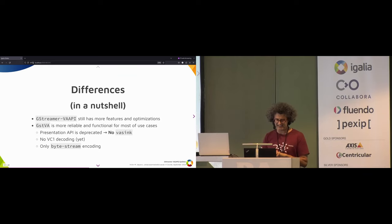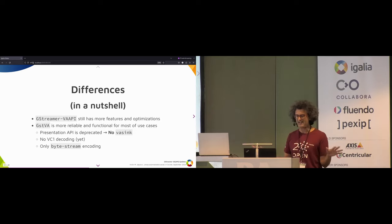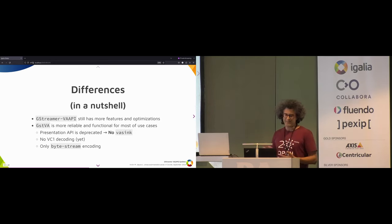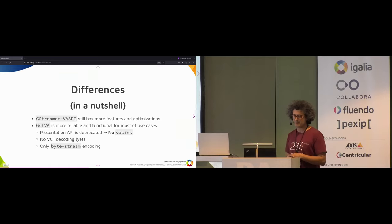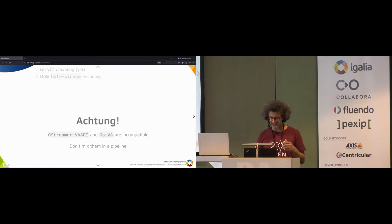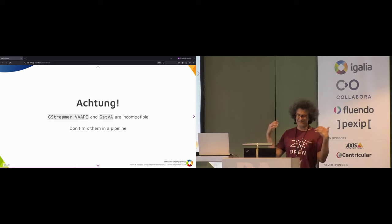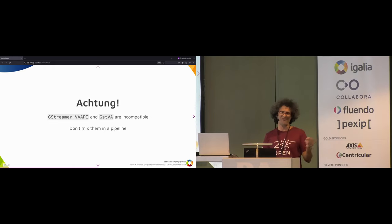One important thing: there is no VASyncAPI. VAPISync uses a presentation API that is already deprecated in VA and LibVA, so there's no presentation API and there's not going to be a VASyncAPI. VC1 decoding is not implemented yet and is not planned so far. For encoding, we only produce byte stream format — there is no Annex B or C — but you can use the parse element to convert to another format. And importantly: don't mix GstVAAPI elements with GstVA elements. They manage the display and surfaces differently, and you're calling for trouble if you do that.